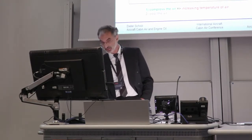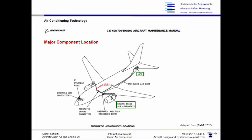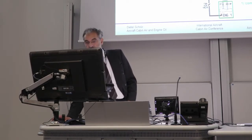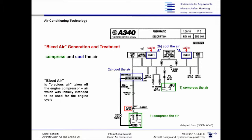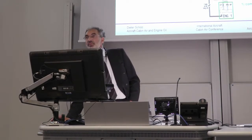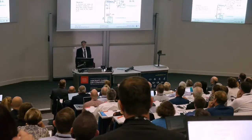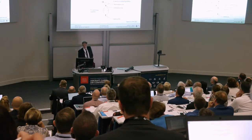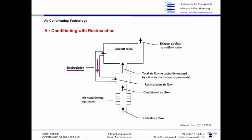At normal cruise altitude we would have something like 50 degrees centigrade, which is too much, and therefore we need cooling. This temperature line is the minimum we need, but we will need more to drive the air conditioning system. Here are the engines with the bleed air going into the cabin — it could also come from the APU. There are usually two valves: the intermediate pressure valve and the high pressure valve, and we have a pre-cooler to reduce the temperature before the so-called packs with the air cycle machine cool it further.